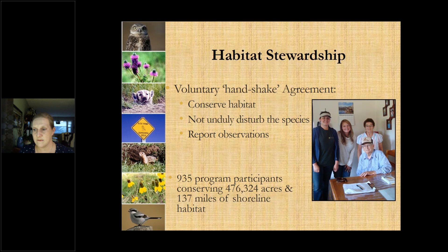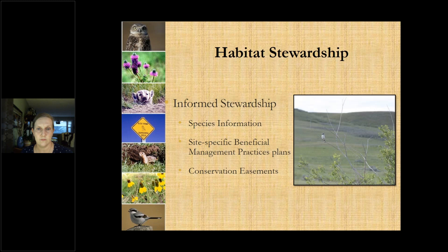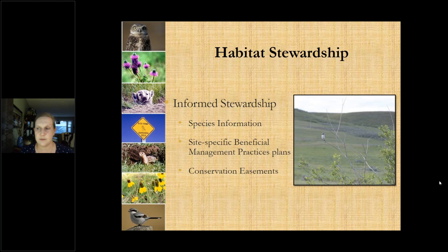Currently there are 935 program participants conserving over 475,000 acres and 137 miles of shoreline habitat — for the target species at risk but also other wildlife. When we say informed stewardship, we mean confirming what practices landowners are already doing that support the species and habitat, and then sharing small changes they might want to consider to further enhance or support the habitat through site-specific management practices. We can also connect landowners interested in conservation easements with a host organization.